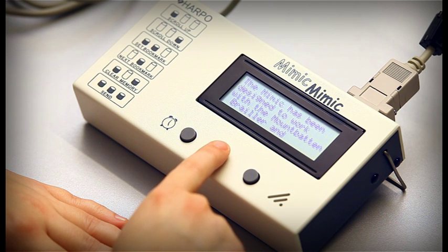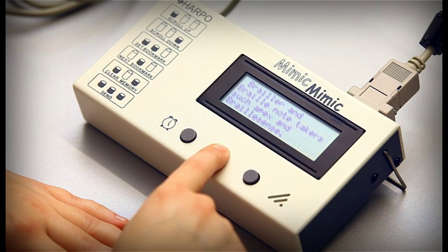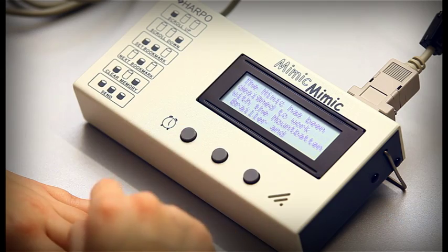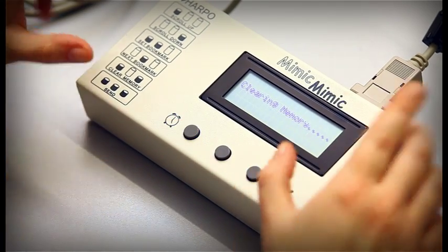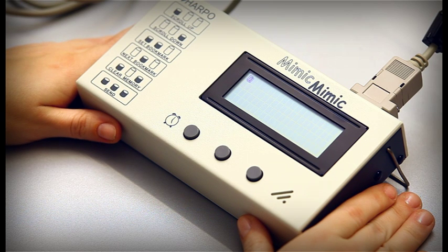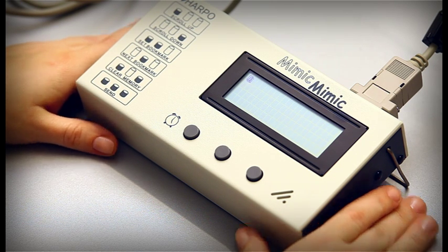To clear the Mimic's memory and have an empty screen, press buttons one and three. The Mimic will ask you if you really want to do this and if you press buttons one and three, it will delete all text from the memory.